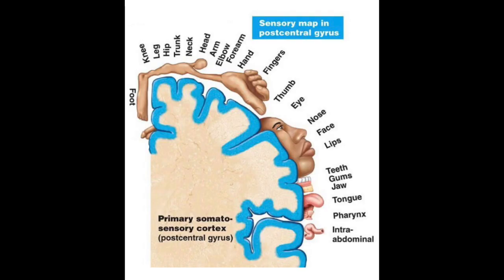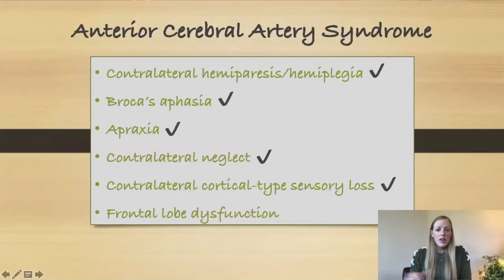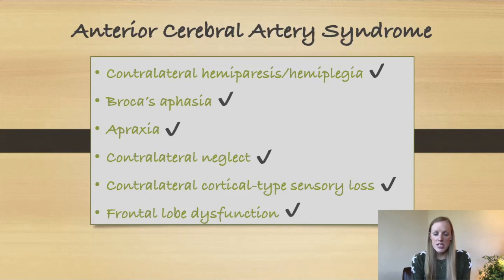We can also see some contralateral cortical type sensory loss. Again, our lower extremities are going to be more affected than our upper extremities because that homunculus map also applies to our sensory cortex — we've got both a motor and a sensory homunculus. When we say cortical type sensory loss, we don't mean normal sensations; we're talking about things like decreased stereognosis or decreased graphesthesia. Our last ACA symptom is a varying degree of frontal lobe dysfunction, which can include a return of the grasp reflex, altered mental status, and impaired judgment.